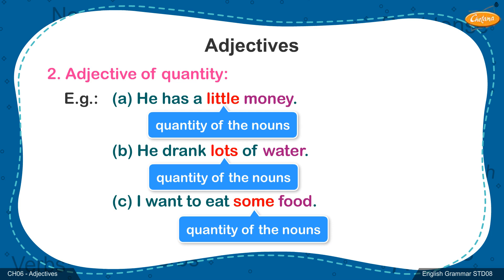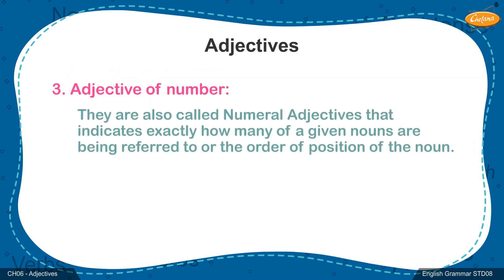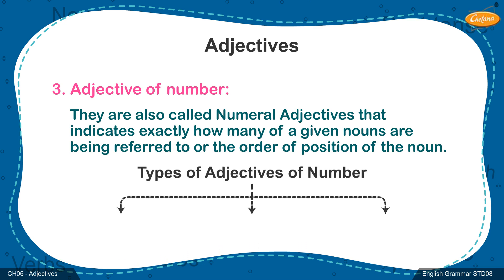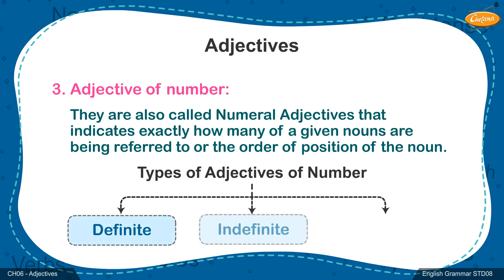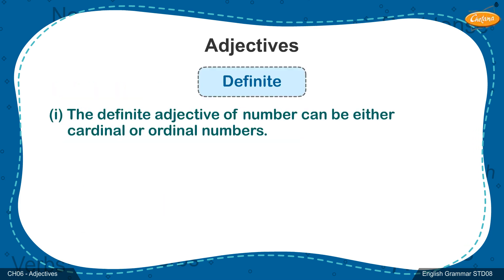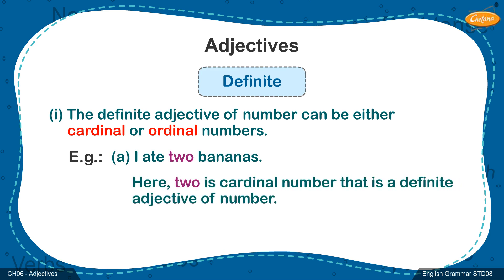Similar to adjectives of quantity, there are adjectives of number, which are also called numeral adjectives, that indicate exactly how many of a given noun are being referred to, or the order of position of the noun. There are three types of adjectives of number: definite, indefinite, and distributive. The definite adjective of number can be either cardinal or ordinal numbers. In the sentence 'I ate two bananas,' the word 'two' describes the number of bananas. It is a cardinal number — that is, a definite adjective of number.